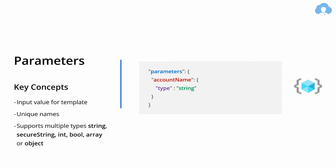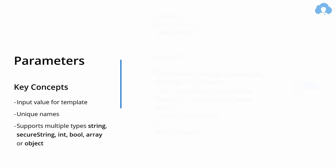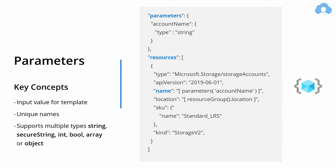The type can be a string, integer, boolean, secure string (which obfuscates the information from template logs), an array, or even an object. Once the parameter is defined, you can start referring to it within your template. From that point on, you can call it anywhere in the template using an expression and calling the parameters function, passing the name of the defined parameter.